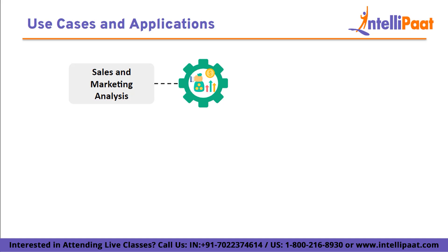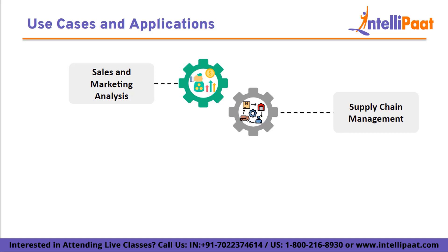This use case helps to optimize sales and marketing efforts, leading to better targeting and increased revenue. Then we have supply chain management. Qlik Sense is valuable for optimizing supply chain operations. Organizations can monitor inventory levels, track the movement of goods, and identify bottlenecks or inefficiencies in supply chain processes. Real-time insights can be used to predict demand, manage inventory efficiently, and reduce excess stock. By visualizing the entire supply chain, companies can make more informed decisions to enhance operational efficiency and minimize costs.